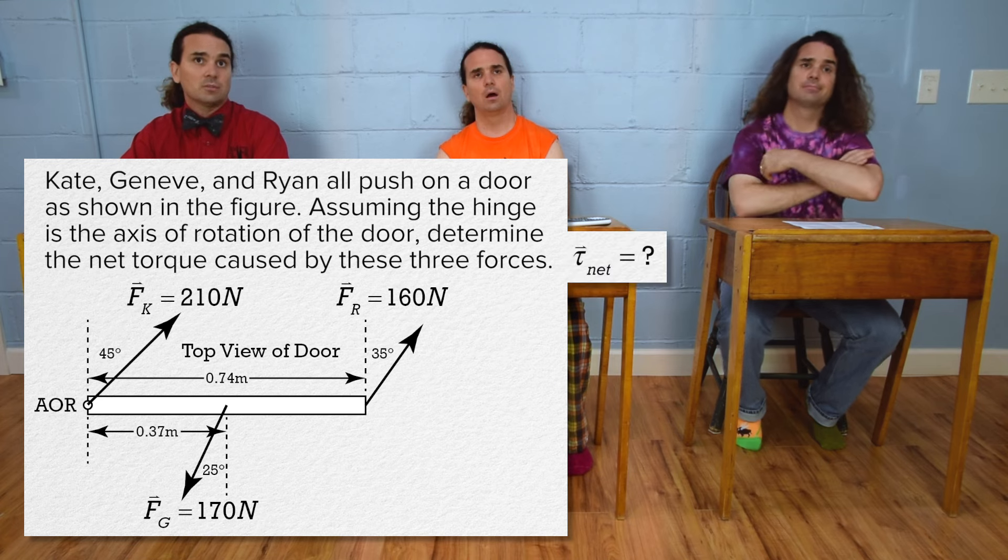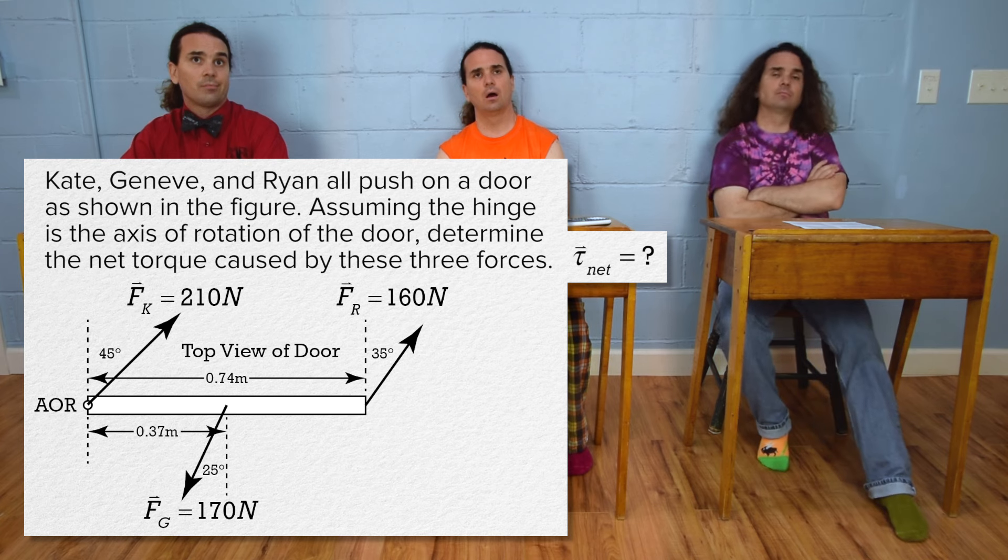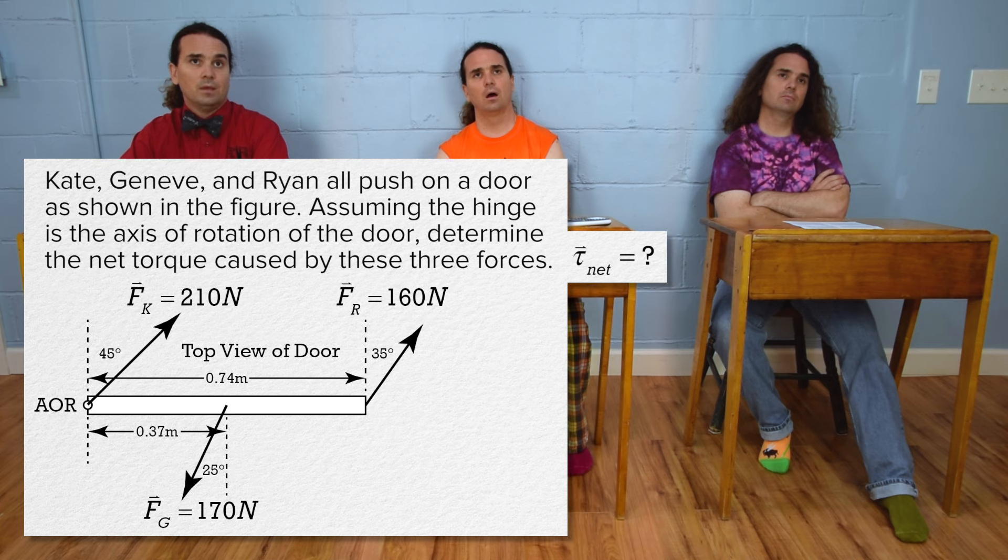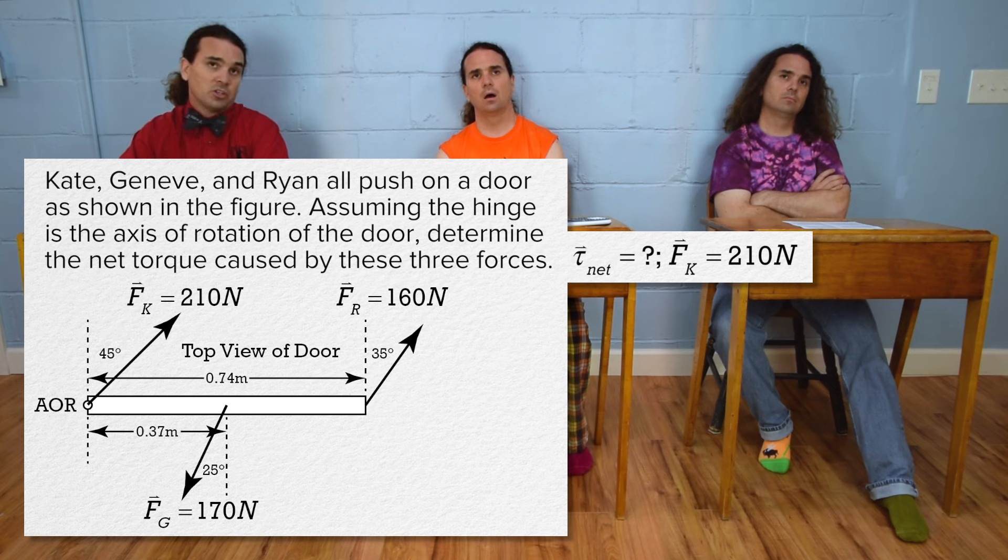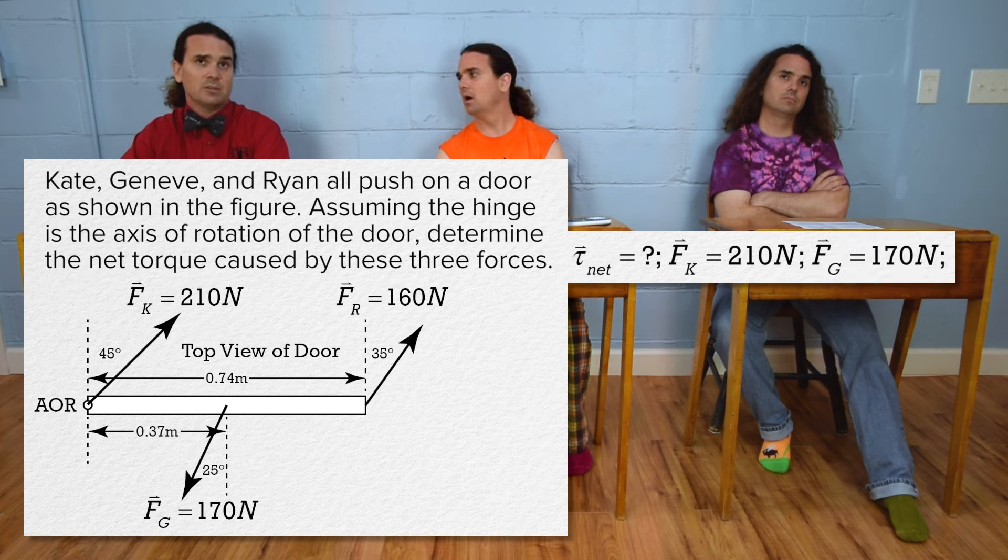Net torque equals question mark. Billy, I bet you can glean some information from the illustration. Yeah, so force from Kate equals 210 newtons, force from Geneve equals 170 newtons, force from Ryan equals 160 newtons.